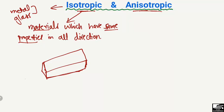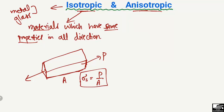For example, consider any material where we apply a tension load P, and A is the cross-sectional area of this material. If we find the strength of this material, it will be the load divided by the cross-sectional area. The strength of this material will be the same in all directions.